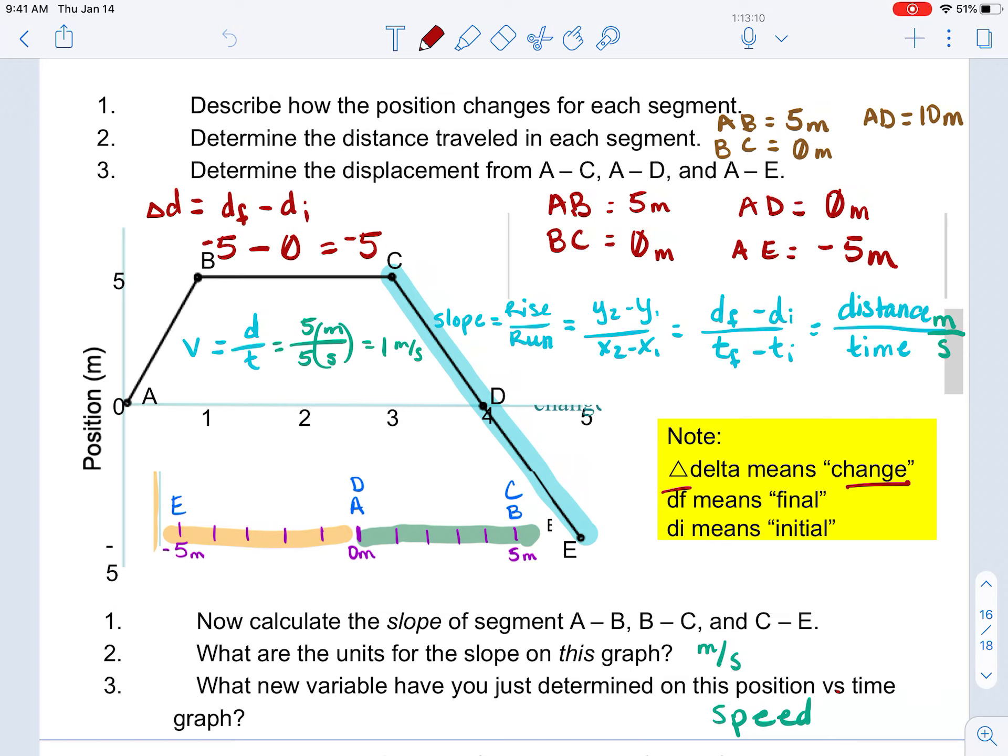So, you can see from my written work here that I've listed an equation. It was really just an explanation of how to find the change in the position. So, delta D is always going to be final position minus initial position.